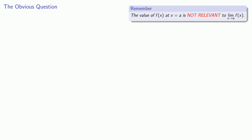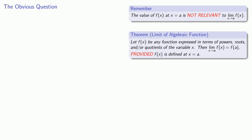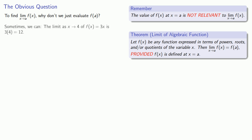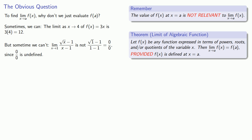Remember when we started talking about limits, we made a big deal about the fact that the value of the function is irrelevant to the value of the limit. And yet we just showed that the limit of an algebraic function is the value of the function at the limit point, provided that value exists. This leads to the obvious question: to find the limit as x approaches a of f of x, why don't we just evaluate f of a? Sometimes we can — the limit as x goes to 4 of 3x is 3 times 4, or 12. But in other cases we can't. If I want to find the limit as x goes to 1 of square root of x minus 1 over x minus 1, I find that at x equal to 1 the numerator and denominator are both 0, and 0 over 0 is undefined. So we can only find the limit by evaluating the function if the function is actually defined at that point.